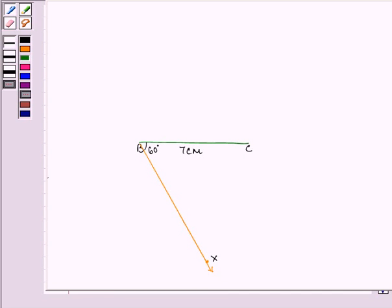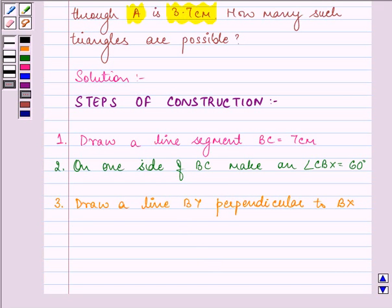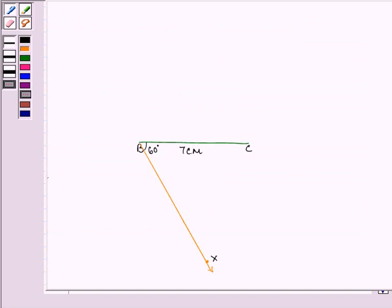Now the third step is to draw a line BY perpendicular to BX. Now here this is BX, we need to draw BY which is a line perpendicular to BX like this.